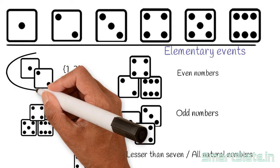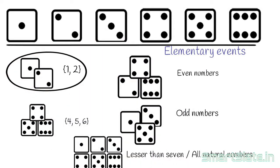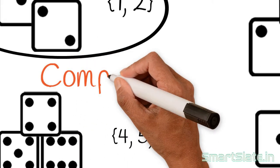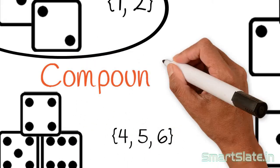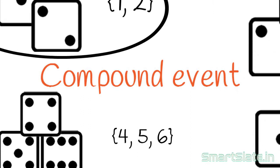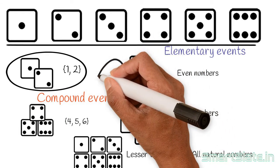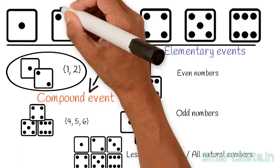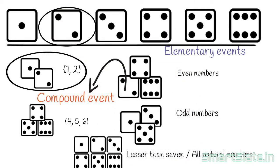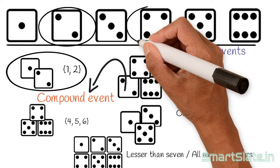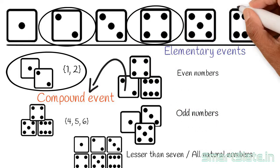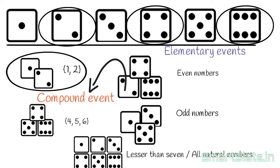Getting less than 3 when a die is thrown is a compound event. A compound event is a combination of 2 or more elementary events. Similarly, getting an even number — which includes getting 2, 4, and 6 — is also a compound event. The elementary events 2, 4, and 6 are said to be favorable to this compound event, because all of them are even numbers.